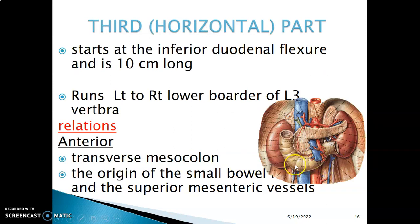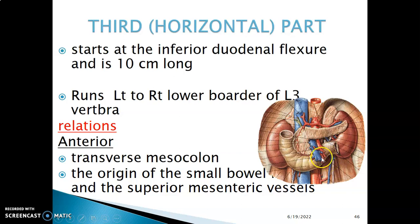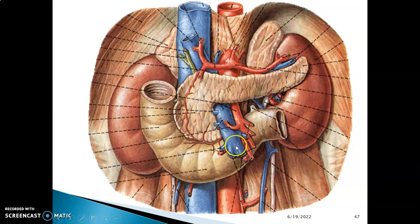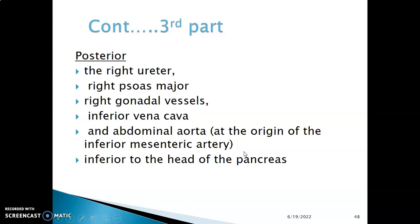The third part of the duodenum is the horizontal part. It starts at the inferior duodenal flexure and is about 10 centimeters long. It runs along the lower border of the L3 vertebra. Anteriorly, you have the transverse mesocolon, the origin of the small bowel mesentery, and the superior mesenteric vessels — the superior mesenteric artery and vein are anterior to the third part of the duodenum.